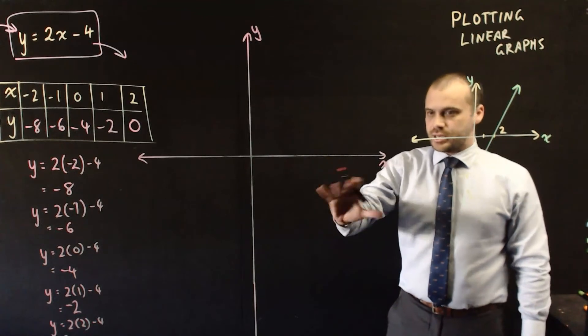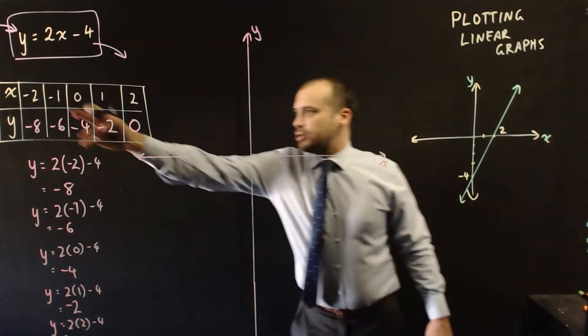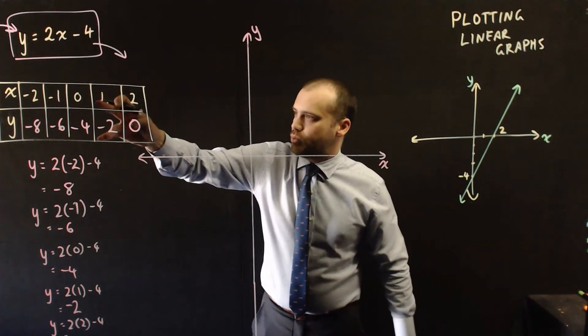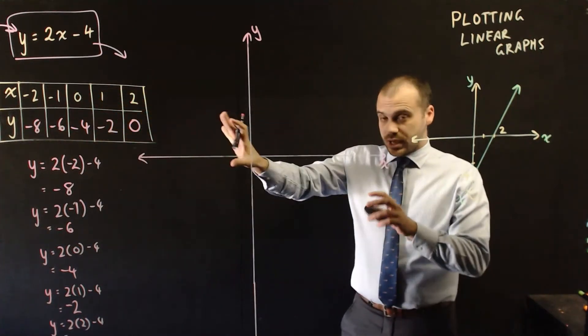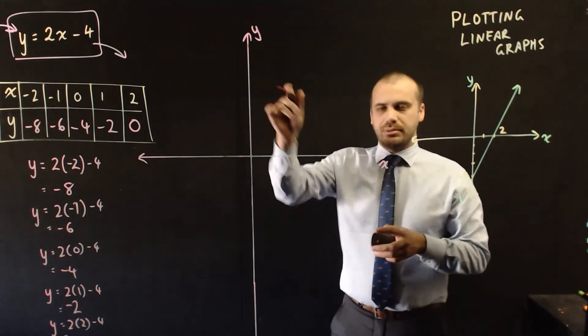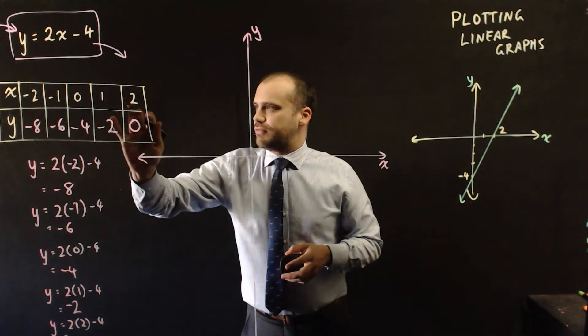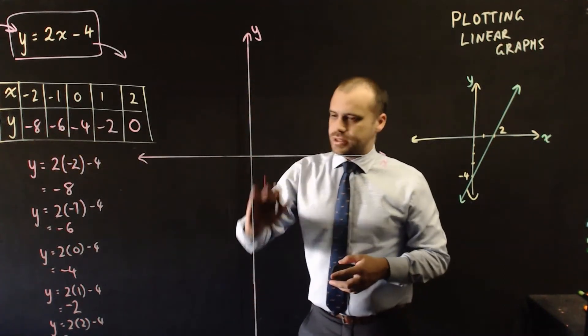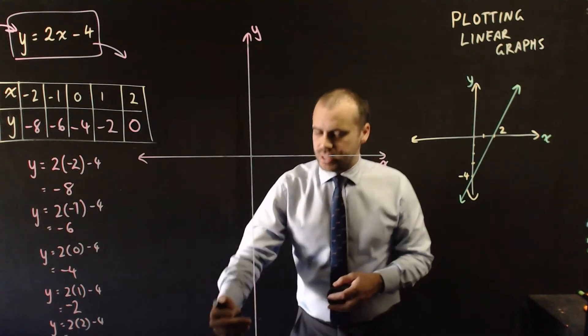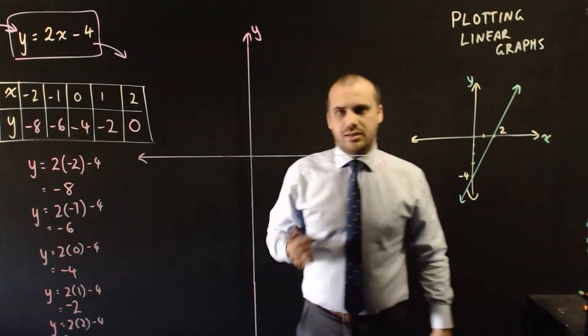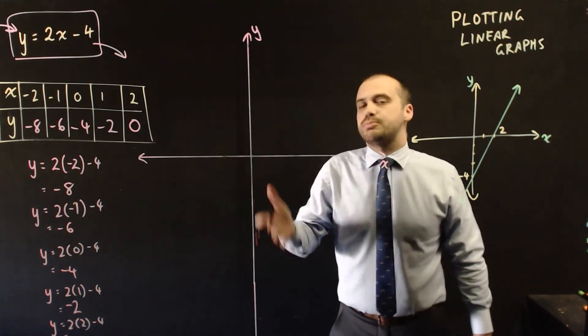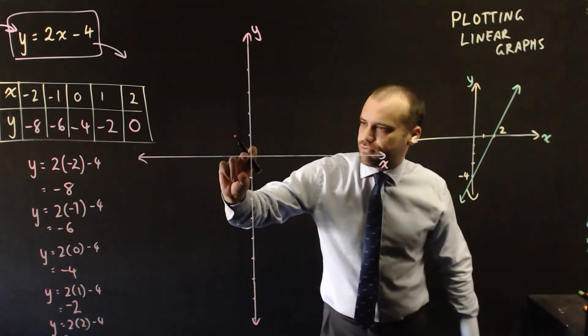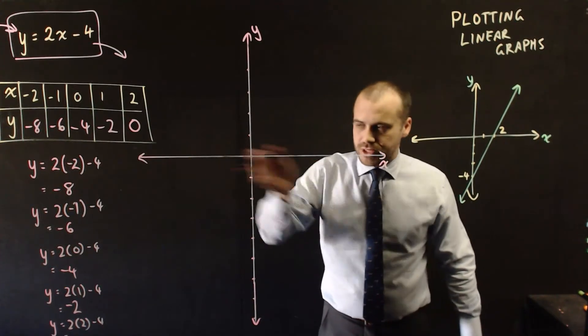So I've drawn a Cartesian plane here, x-axis, y-axis, and now I'm going to plot these pairs of values. Before I get started plotting them, I need to consider how I should label up my axis. Now the x-values go from negative 2 to positive 2. The y-values go from negative 8 down to 0. So I need to be really careful that I can fit in all the way down to negative 8. I'm going to draw equally spaced lines here using 5 centimeters for the gap each time.